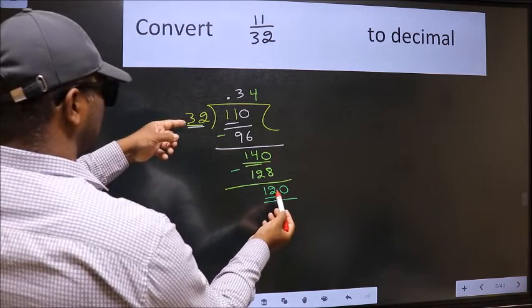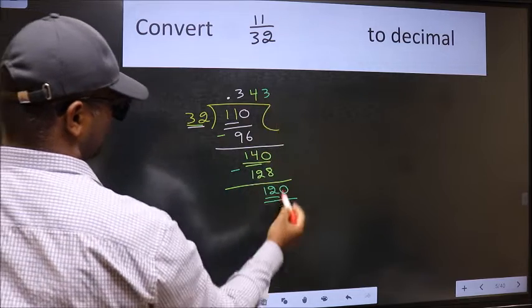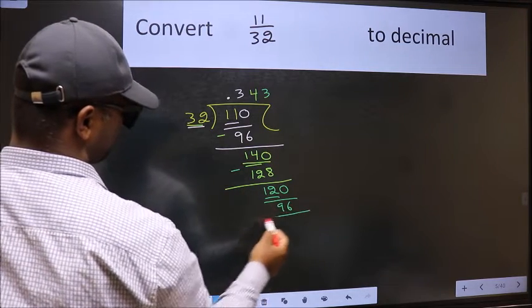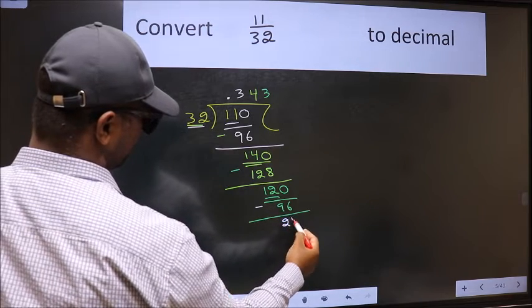A number close to 140 in 32 table is you take 32 3s, 96. Now, we should subtract. We get 24.